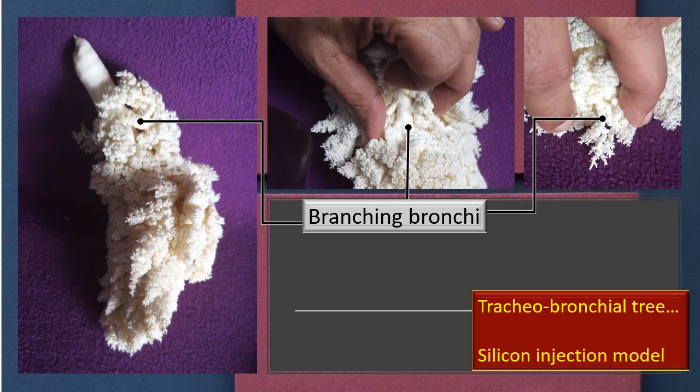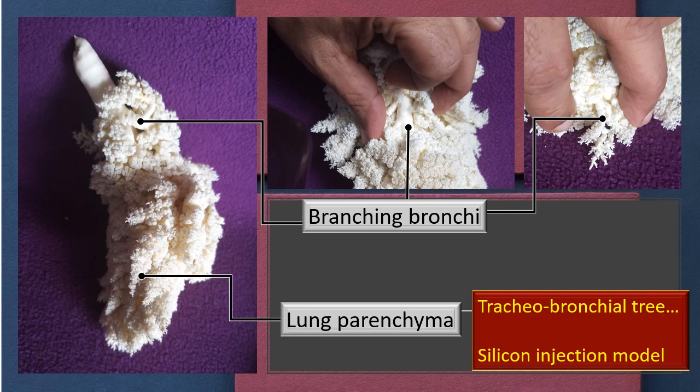Let's examine a few spots in this tracheobronchial tree to understand the branching pattern. Most textbooks describe a dichotomous branching pattern. I am showing you select spots where the branching of the bronchial tree is very clearly visible. At the very ends, in the extreme areas, I have labeled it as lung parenchyma — meaning that area plus all the surrounding tissues in the immediate vicinity combined we call the lung parenchyma.